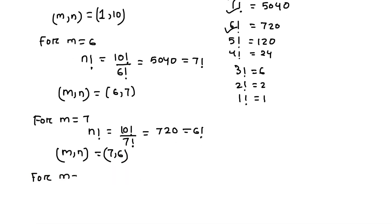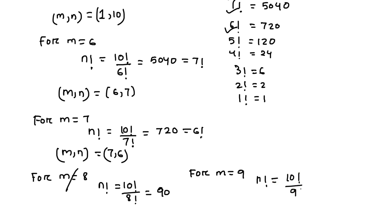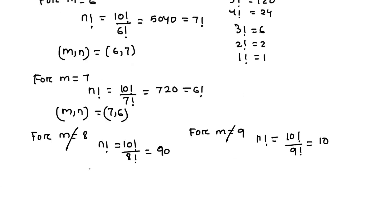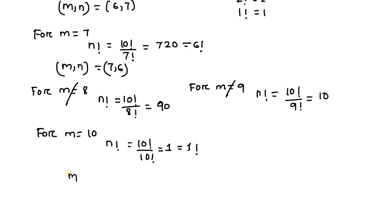For m equals to 8, n factorial equals 10 factorial divided by 8 factorial, which equals 90 — not a perfect factorial value, so m equals to 8 is discarded. For m equals to 9, n factorial equals 10 factorial divided by 9 factorial, giving 10 — also not a perfect factorial, so m equals to 9 is discarded. For m equals to 10, n factorial equals 10 factorial divided by 10 factorial, giving 1, which equals 1 factorial — a perfect factorial value. So m equals to 10 is valid, giving m comma n equals to 10 comma 1.